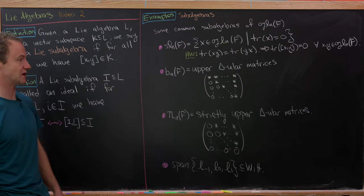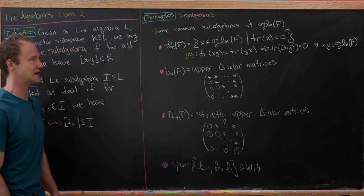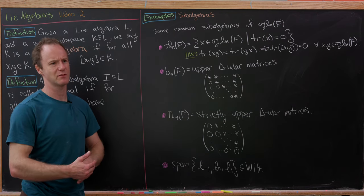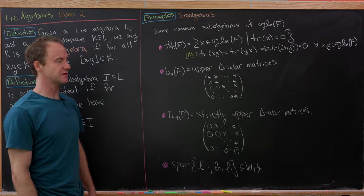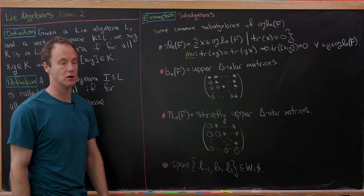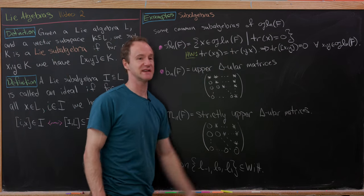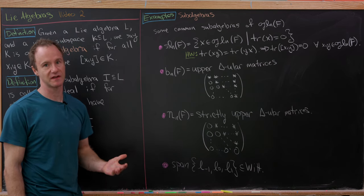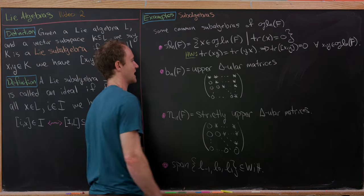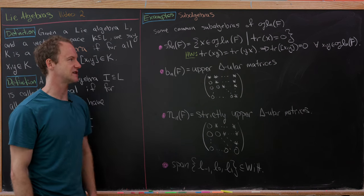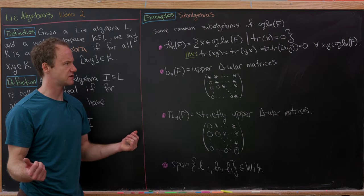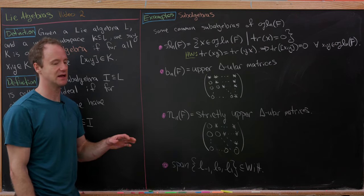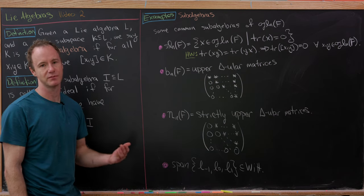Let's look at some basic examples of subalgebras, starting with subalgebras of gl(n,F) — the set of all n-by-n matrices with entries from a field F, where the bracket is the commutator xy minus yx. First, sl(n,F) is the set of all elements with trace zero. Recall the trace is the sum of the diagonal elements. As a homework exercise, you can prove that the trace of [x,y] equals the trace of [y,x], which means the trace of any commutator is zero. So if you start with two trace-zero elements, you end up with something of trace zero. In fact, sl(n) has a little more structure than just a subalgebra.